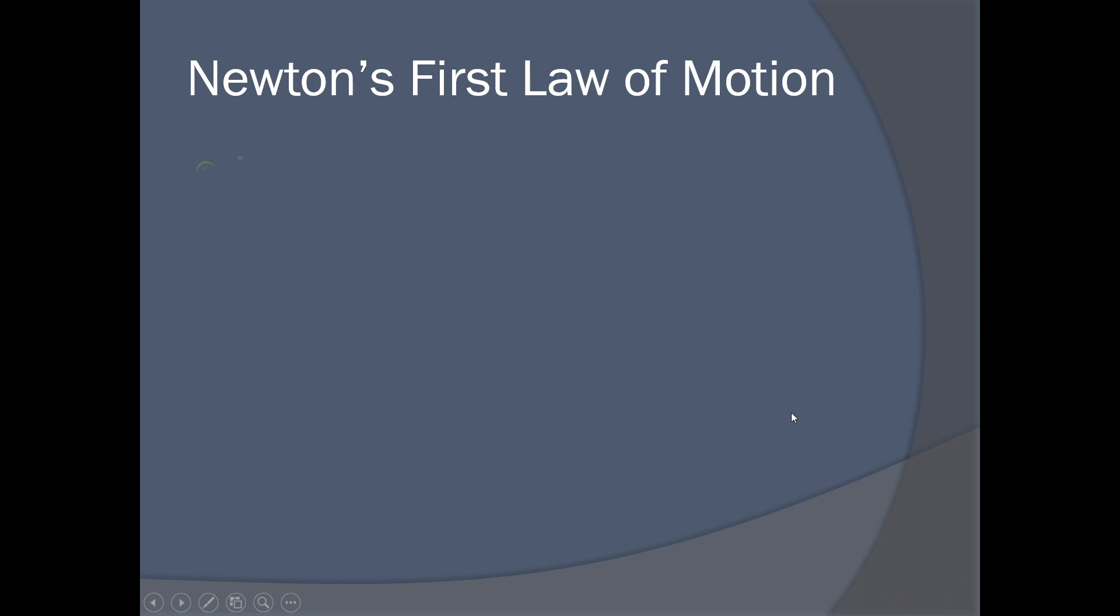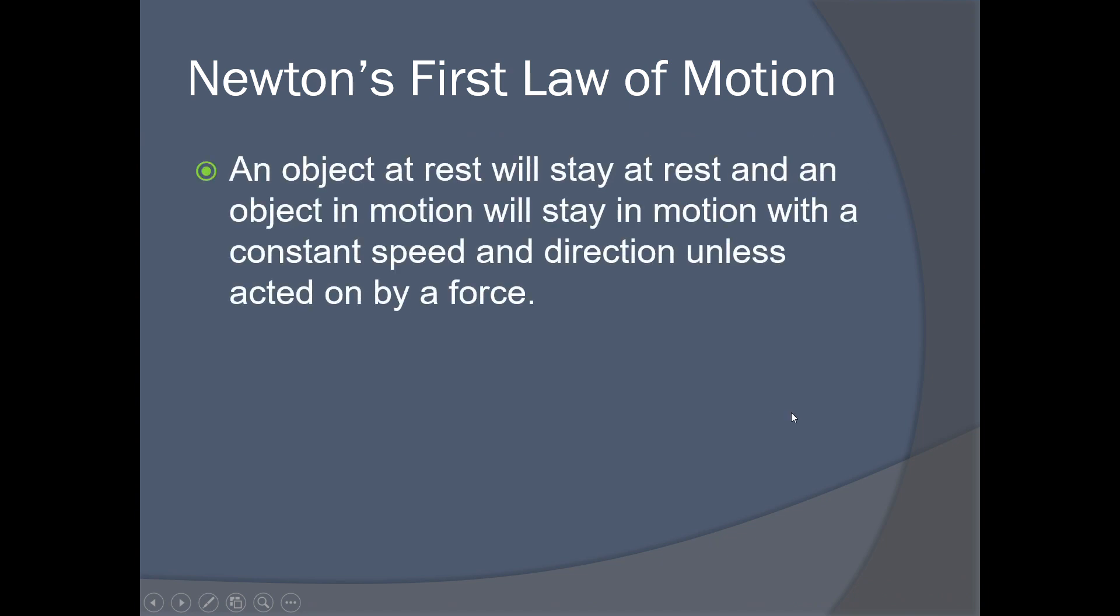This is going to be Newton's first law of motion, which we all remember: An object at rest will stay at rest, and an object in motion will stay in motion with a constant speed and direction unless acted upon by a force. Who can explain what that means? Pause the video and give it a shot. Exactly! So an object will continue to move or an object will continue to stay still unless it's acted upon by a force. That force can be anything, and this applies to space.